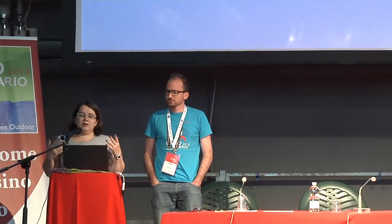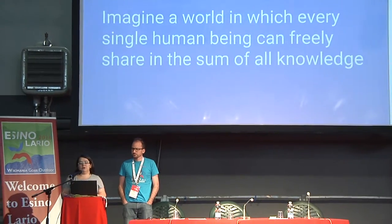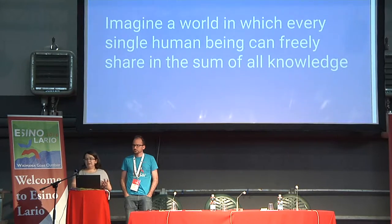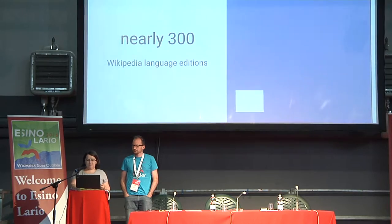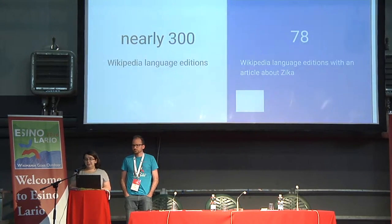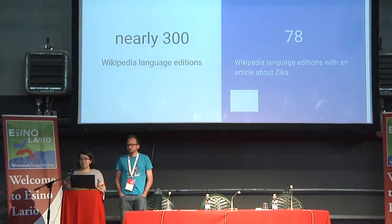Wikipedia, or Wikimedia as a whole, has this vision of a world in which every single human being can freely share in the sum of all knowledge. But I think everyone would agree that we are still very far away from that. For example, we have nearly 300 Wikipedia language editions, but only 78 of those have an article about Zika,